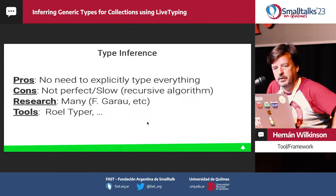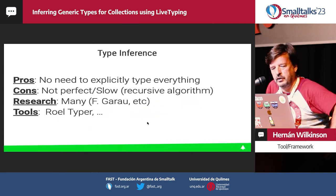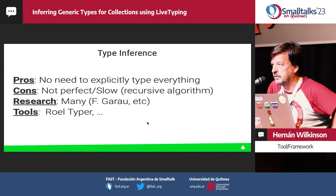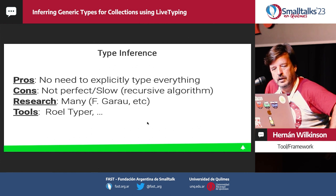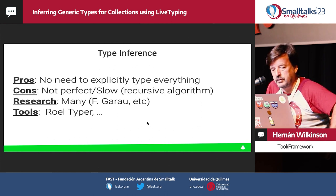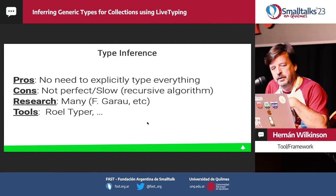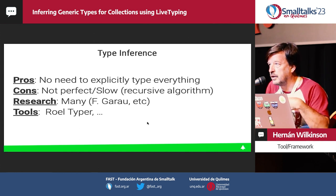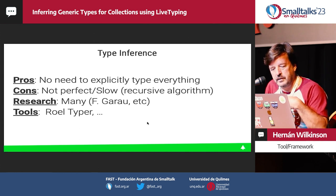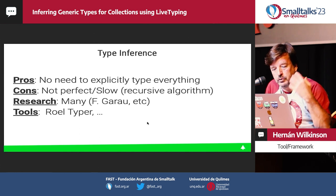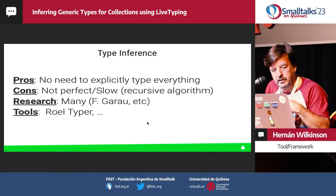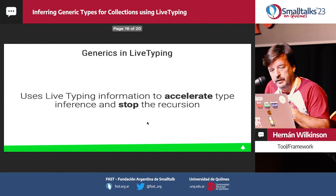Type inference has pros and cons. The pros: you don't need to explicitly type everything — the system deduces types for you. The cons: it's not perfect, it's slow since it's a recursive algorithm. There's been a lot of research. We also have a thesis for Squeak made by Francisco Garau, and many tools in Smalltalk — like RoelTyper, which is based on type inference.